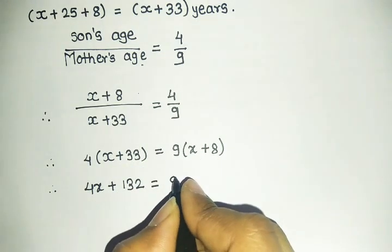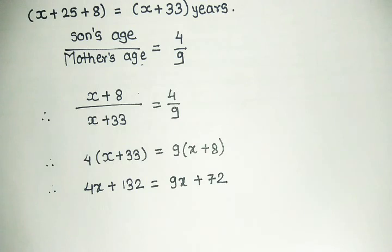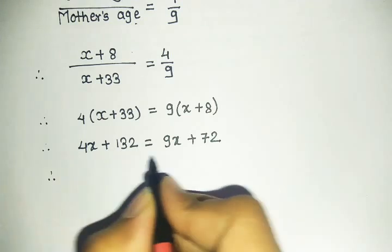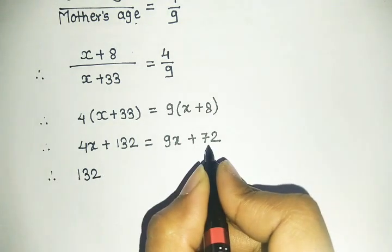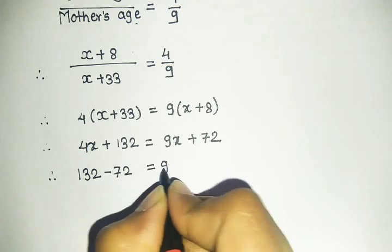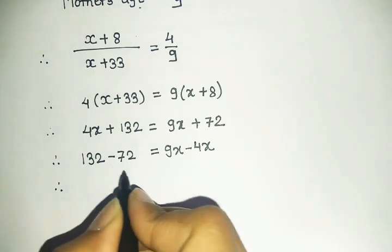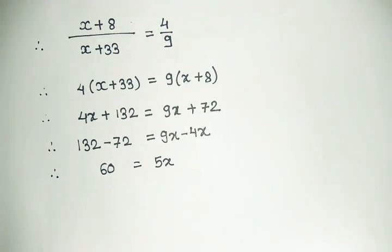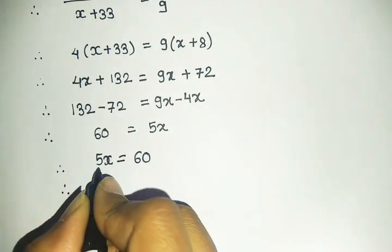Now we'll rearrange, putting x terms on one side and numbers on the other. 132 minus 72 equals 60. 9x minus 4x equals 5x. Therefore, 5x equals 60.